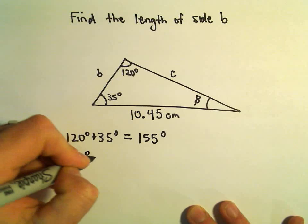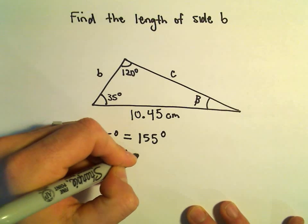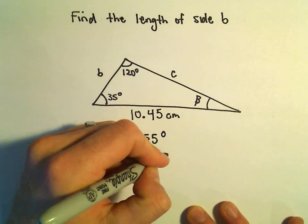If we take 180 and subtract our 155, that's simply going to leave us with 25 degrees.